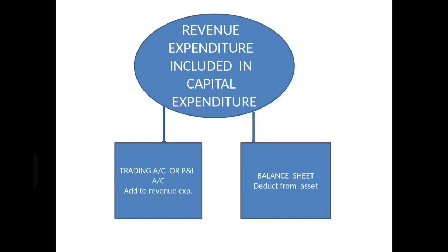The opposite is revenue expenditure included in capital expenditure. For example, you paid for repairs to machinery — repairs is a revenue expenditure — but you put it in the machinery account, whereas it should be in the repairs account. Now you have to deduct it from the machinery account, reducing the asset. The second effect is you show it in profit and loss account or trading account debit side — adding it to the revenue expenditure.